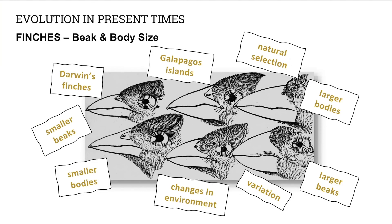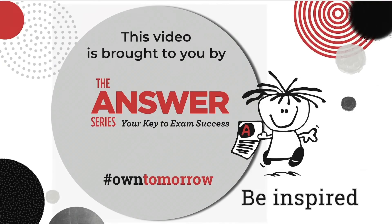Darwin also found variation in beak and body size in the Galapagos finches. A bird with a beneficial or favourable characteristic, like a big beak or a larger body, survives, reproduces, and passes on the favourable trait. This is an example of modern-day evolution in finch species. And that's it for our overview of this section. Thank you for listening, Grade 12s. We hope you have a better idea of the content that will be covered in the videos to follow on evolution by natural selection. Thank you, and bye.